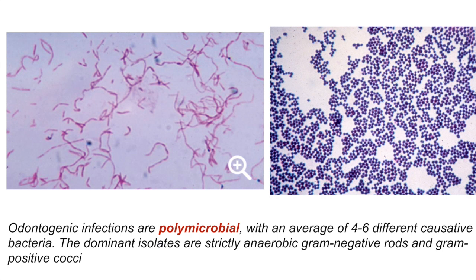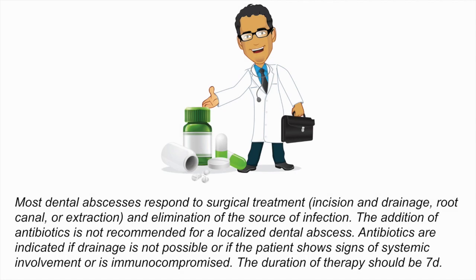Odontogenic infections are polymicrobial with an average of four to six different causative bacteria. The dominant isolates are strictly anaerobic gram-negative rods and gram-positive cocci. Most dental abscesses respond to surgical treatment — incision and drainage, root canal, or extraction — and elimination of the source of infection. The addition of antibiotics is not recommended for a localized dental abscess. Antibiotics are indicated if drainage is not possible or if the patient shows signs of systemic involvement or is immunocompromised. The duration of therapy should be seven days.